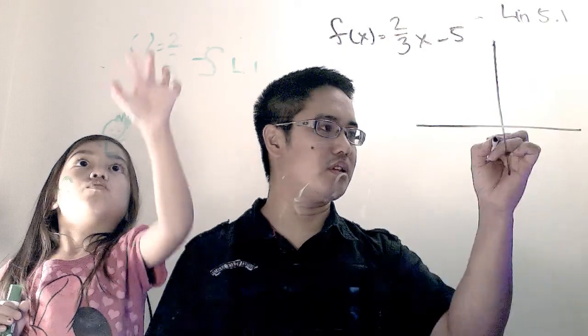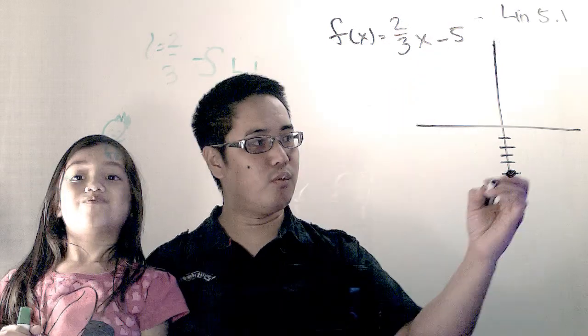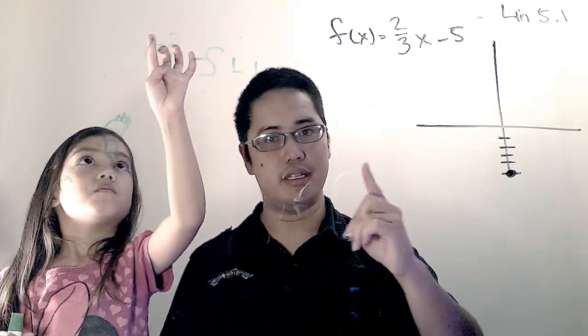Graphing that's pretty simple. You just go down five. One, two, three, four, five. And that's one of the points that I know guaranteed is on this graph.